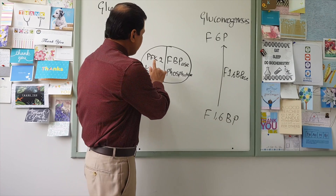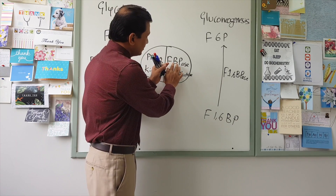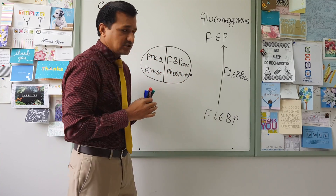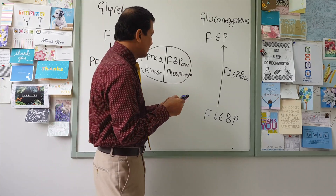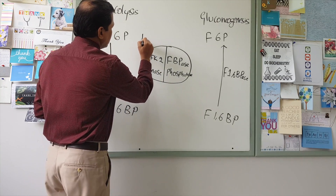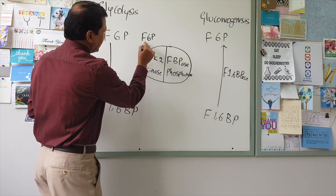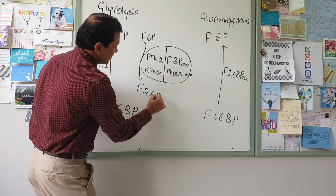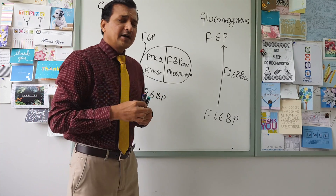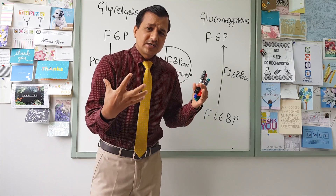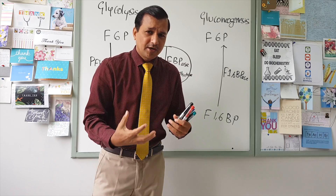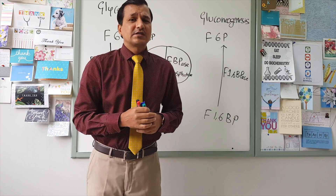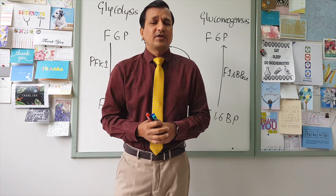This bifunctional enzyme has two subunits — a kinase domain and a phosphatase domain. Whenever the kinase is active, fructose 6-phosphate, a glycolytic intermediate, will be converted into fructose 2,6-bisphosphate. We need to understand when fructose 2,6-bisphosphate is elevated in hepatocytes, where gluconeogenesis predominantly occurs, and under which conditions this happens.